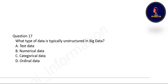Question 16: What type of data is typically unstructured in big data — numerical data, text data, categorical data, or ordinal data? The correct option is option A: text data is typically unstructured in big data.